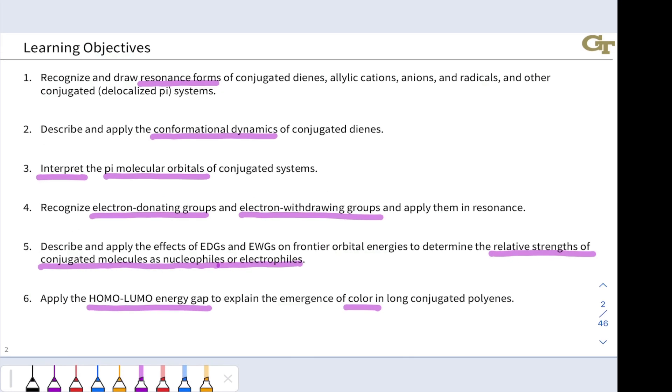In learning objective five, we'll learn to apply electron donating and withdrawing groups, looking at their effects on the energies of the HOMO and LUMO of a conjugated system and the relative strengths of those molecules as nucleophiles or electrophiles.